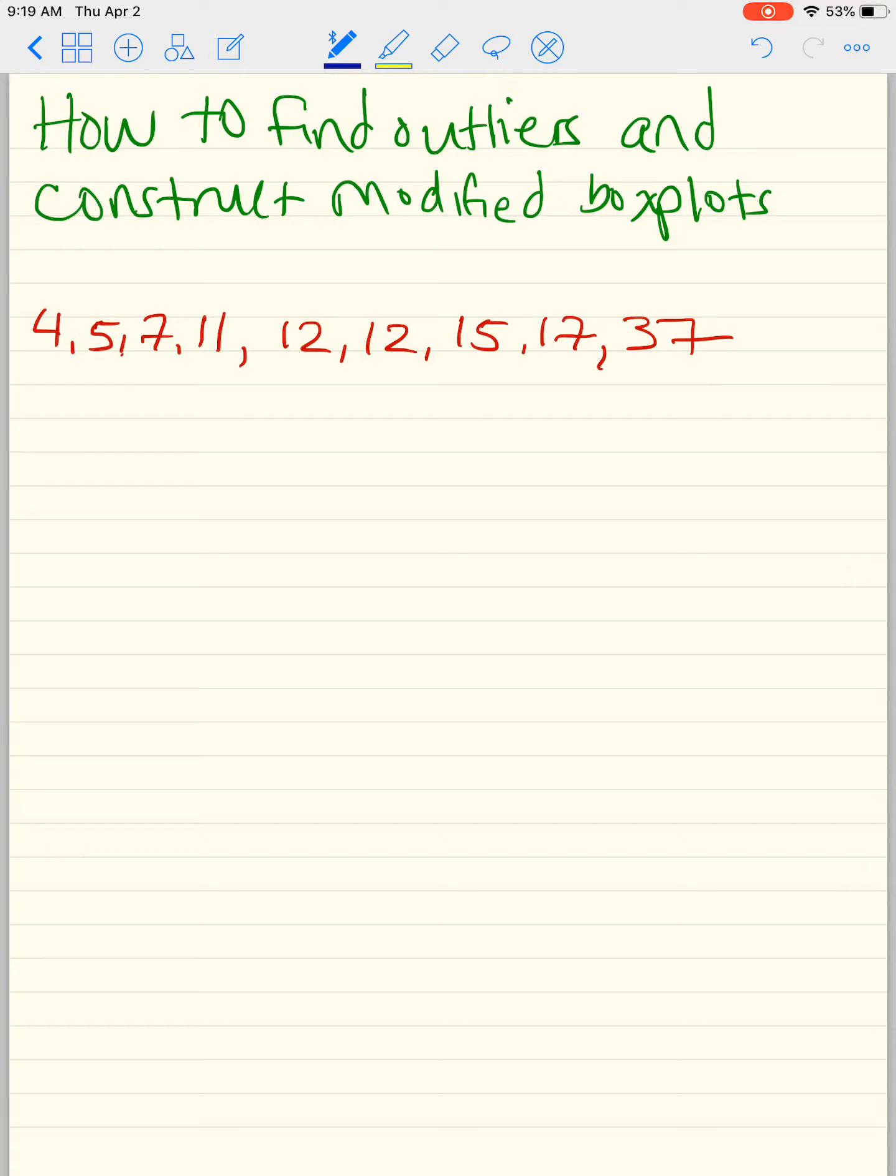In this case here, I have a few numbers below: 4, 5, 7, 11, 12, 12, 15, 17, and then there's this number 37 that concerns me. It may be an outlier, but unless we check for it using a mathematical formula, we can't really say it's an outlier. You may say it's a potential outlier, but if you want to say it is an outlier, then you're going to have to follow these steps.